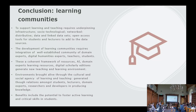To conclude: supporting learning and teaching going forward requires an underpinning infrastructure that is socio-technical, networked, and distributive, with data and linked data sets and open access for students and lecturers to add data. The development of learning communities requires the integration of well-established communities of domain experts, digital humanities experts, but also teachers and learners. These develop a coherent framework of resources to generate a new teaching and learning environment, brought alive through the cultural and social agency of learning and teaching — generated through relations amongst students, lecturers, domain experts, researchers, and developers.